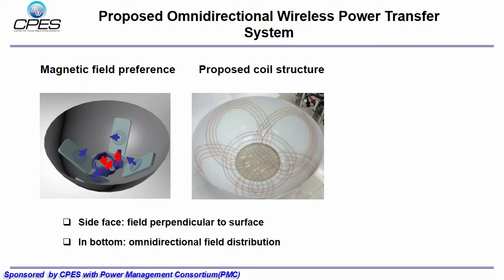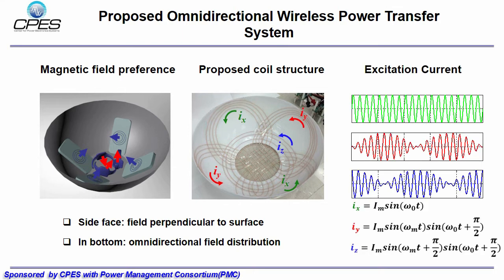This is our transmitter coil structure. There are five coils in total, four coils spread around side phase, and one coil down in the bottom. The excitation current of five coils is shown here. With this modulated excitation current, field in the bottom will rotate in different direction.